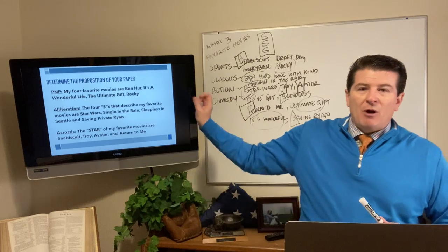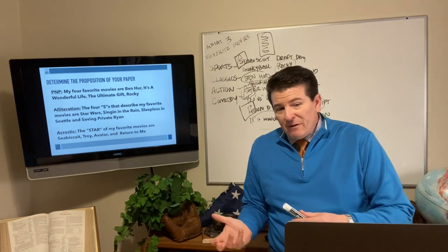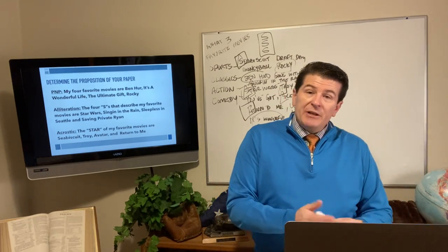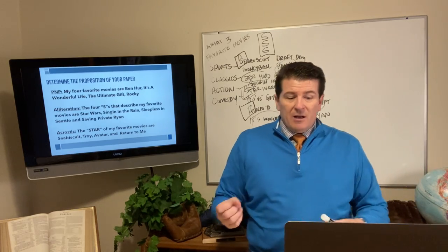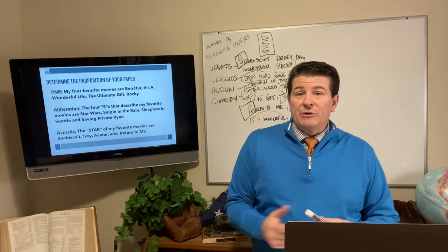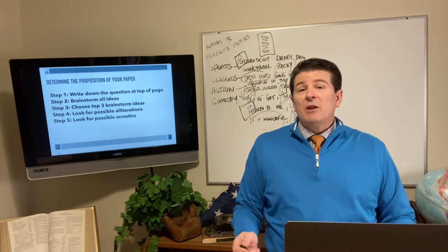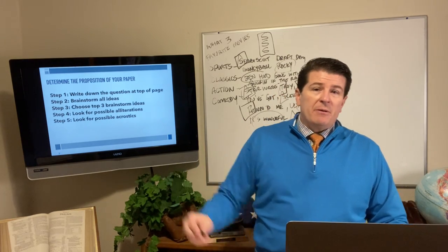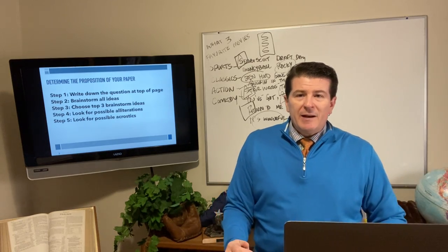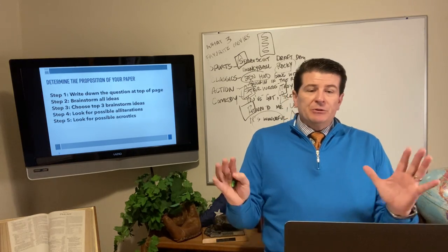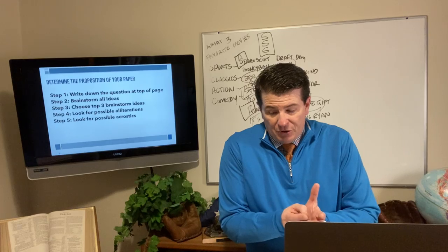Now we're developing that plural noun proposition. My four favorite movies are Ben-Hur, It's a Wonderful Life, The Ultimate Gift, and Rocky. My three favorite movies are Ben-Hur, It's a Wonderful Life, and Rocky. For an alliteration: the four S's that describe my four favorite movies are Star Wars, Singin' in the Rain, Sleepless in Seattle, and Saving Private Ryan. For the acrostic: the STAR of my favorite movies are Seabiscuit, Troy, Avatar, and Return to Me. When determining the proposition, write it down, brainstorm your ideas on a separate sheet, choose your top three, and consider alliterations or acrostics.